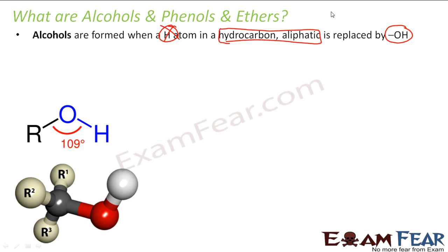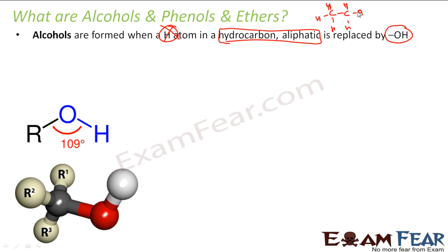For example, take ethane with all its hydrogens. If I remove one hydrogen and replace it with OH, what you get is ethyl alcohol — methyl alcohol in the case of methane. So you take an aliphatic hydrocarbon, replace H with OH, and you get alcohol.